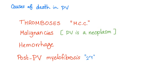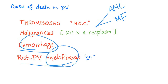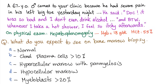Causes of death in polycythemia vera: thrombosis (most common), malignancies from transformation to acute myeloid leukemia or myelofibrosis, hemorrhage, and post-PV myelofibrosis. Here's a case: a 67-year-old male presents with severe pain in his left big toe last night, denying alcohol use, and reports itching after hot showers. Exam shows hepatosplenomegaly; hemoglobin is 18, hematocrit is 55. What do you expect on bone marrow biopsy? A) Normal, B) Clonal plasma cells >10%, C) Hypercellular marrow with panmyelosis, D) Hypocellular marrow, or E) Myeloblasts >20%?